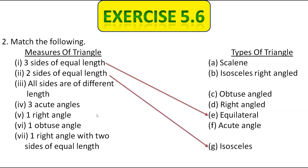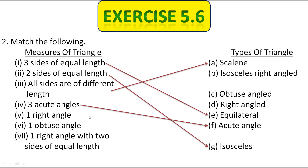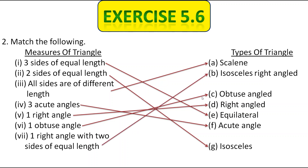Next, all sides are of different length — it is called scalene triangle, which is option A. Next, three acute angles — it is called acute angle triangle, option F1. Next, one right angle — it is called right angle triangle. Next, one obtuse angle — it is called obtuse angle triangle. Next, one right angle with two sides of equal length — it is isosceles as well as right angle triangle.